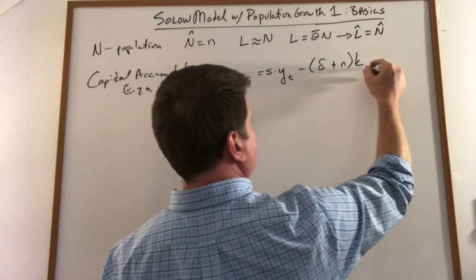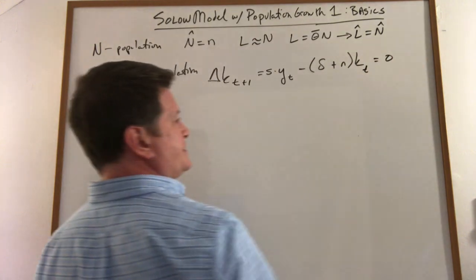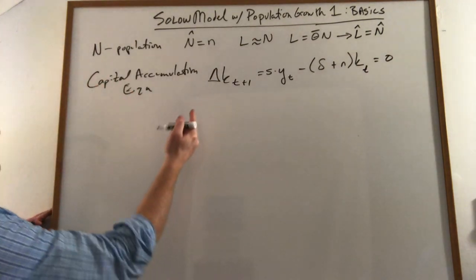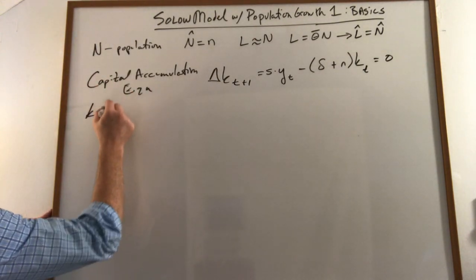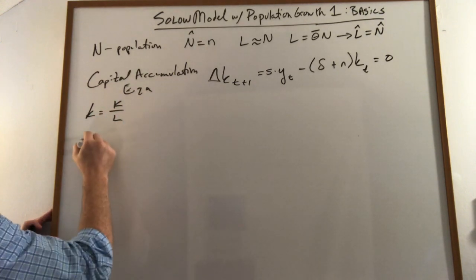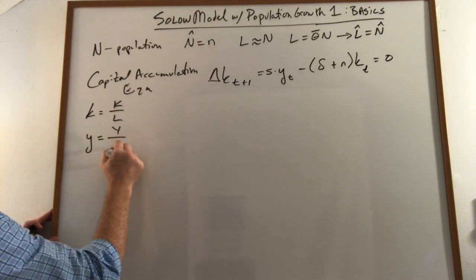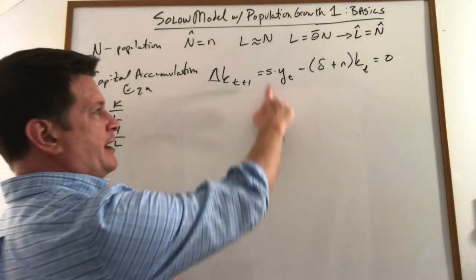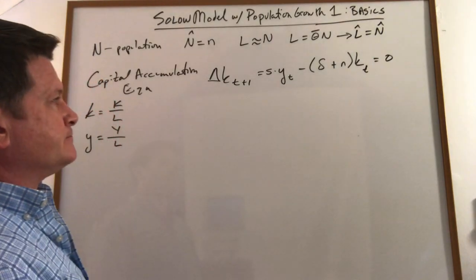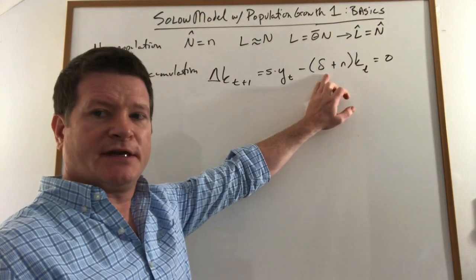And in steady state we're looking at when that is zero. Just a quick reminder little k is capital per labor. Little y is GDP per labor. Little s is the savings rate. And delta is the depreciation rate.